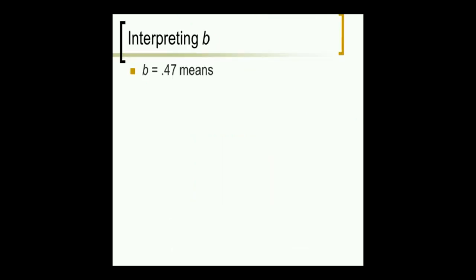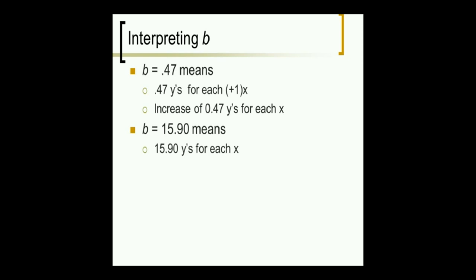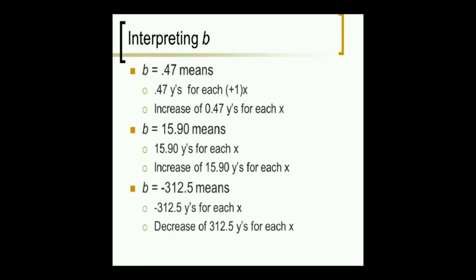B equals 0.47 means there are 0.47 y's for each x. So, every one x going up is almost one-half of y going up. B equals 15.90 means there's 15.9 y's for each x. Negative 312.5 means a decrease of 312.5 in y for each additional x.